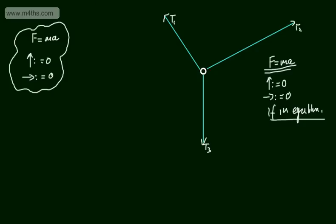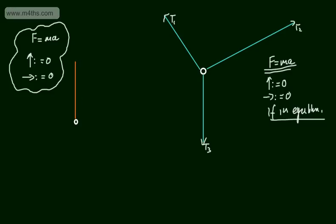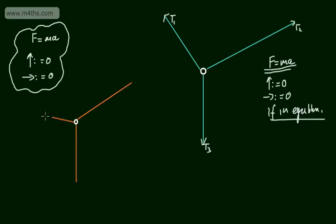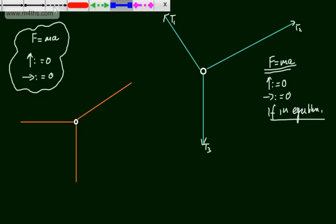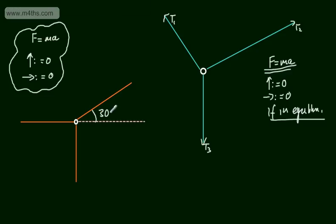Let's look at a basic example. We'll have a particle, and I'm going to apply three different forces. I'll have one at an angle of 30 degrees to the horizontal, and one horizontal. Let's say this force is 12 Newtons. I'm going to have two unknown forces — let's call this one P, and let's call this one Q.